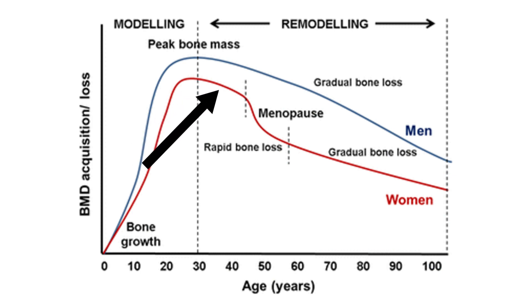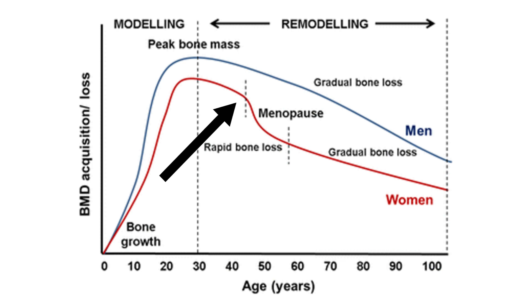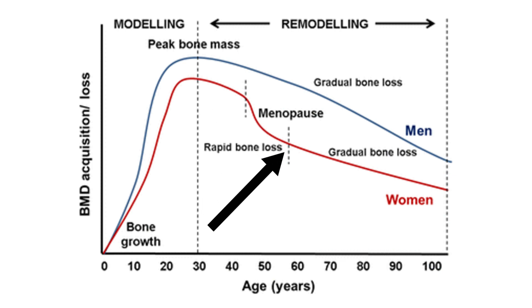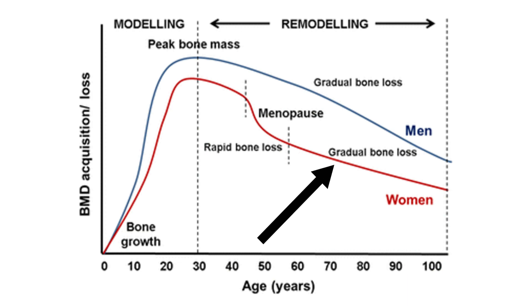After age 30, there's a gradual drop-off in bone density for both women and men. Women have a large drop-off in bone density when they go through menopause — the change in estrogen causes a big drop in bone density. This is where DEXA scans come in.